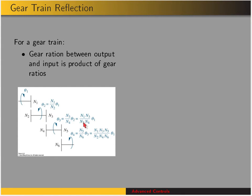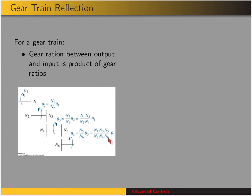So theta 3 equals N1 over N2 times N3 over N4 times theta 1. With one more gear pair, theta 4 is related to theta 3 by that gear ratio, and substituting gives the overall gear ratio of the entire train. The overall gear ratio is just the product of the individual gear ratios: N1 over N2 times N3 over N4 times N5 over N6.